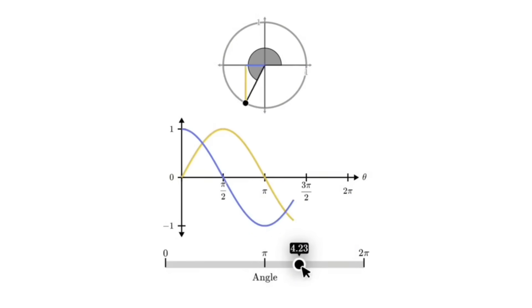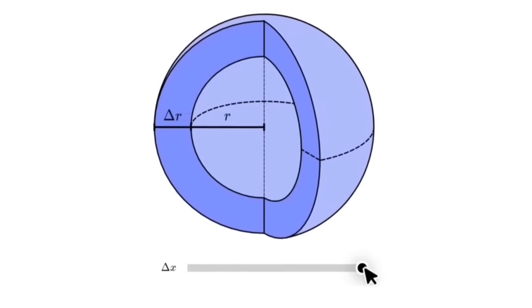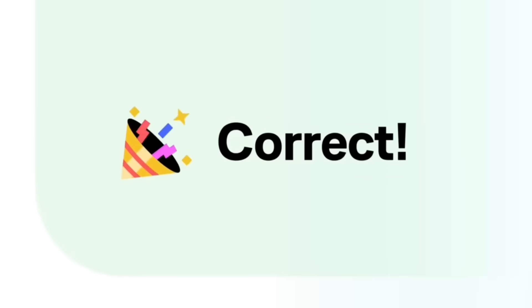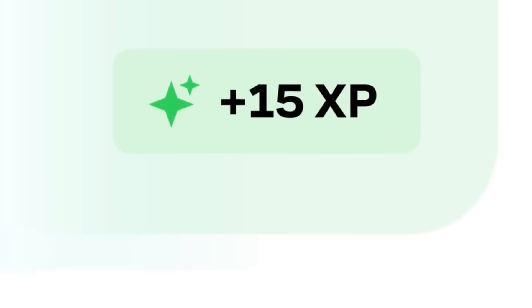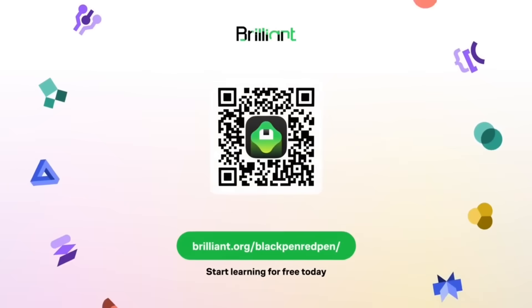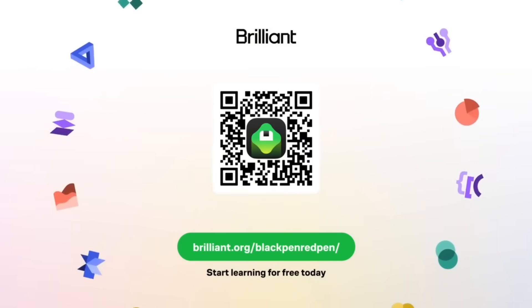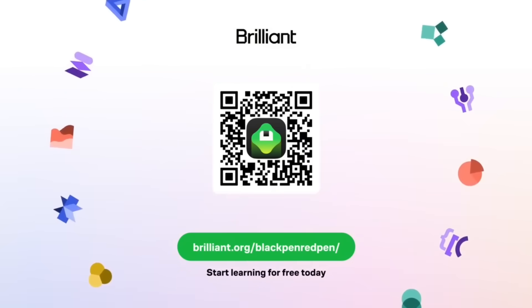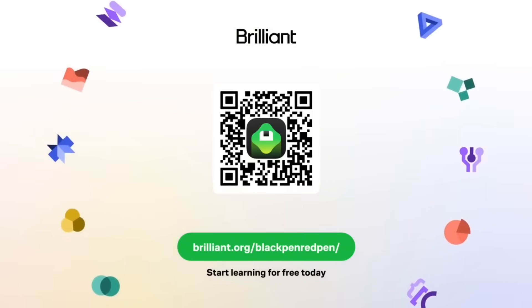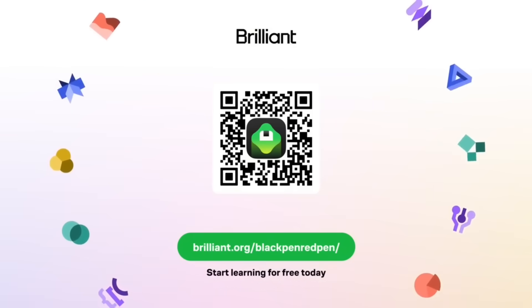And if you are working on algebra or calculus, their courses are especially strong. Everything is built up to help you really understand. Go ahead and visit the link Brilliant.org slash blackpenredpen or scan the QR code on screen or you can also click on the link in the description. When you do that, you will get 20% off an annual premium subscription. So go ahead and check them out.